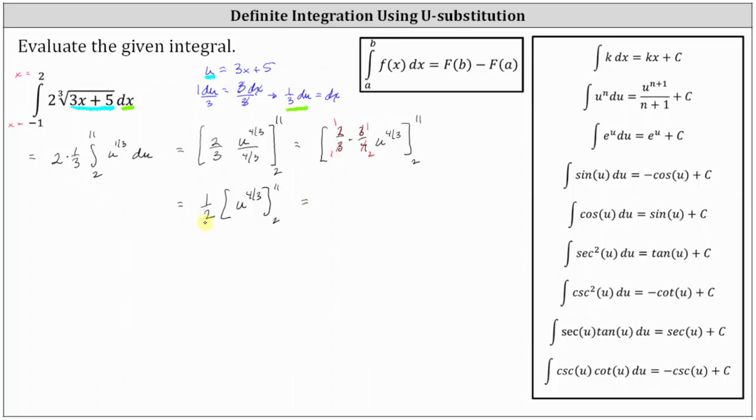Now we need to determine one-half times the difference of F of 11 and F of 2, which gives us one-half times the quantity 11 to the four-thirds minus 2 to the four-thirds.